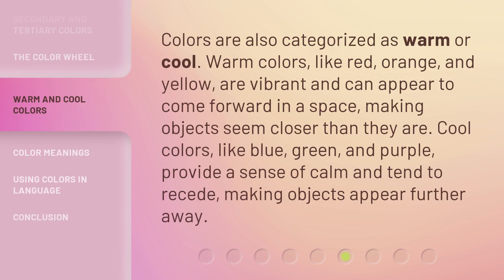Colors are also categorized as warm or cool. Warm colors, like red, orange, and yellow, are vibrant and can appear to come forward in a space, making objects seem closer than they are. Cool colors, like blue, green, and purple, provide a sense of calm and tend to recede, making objects appear further away.